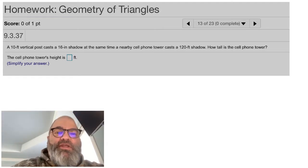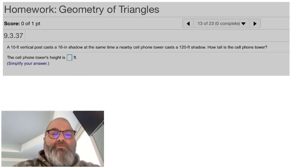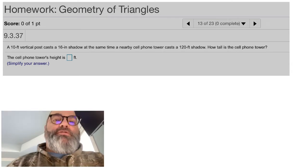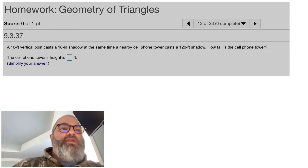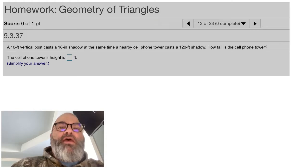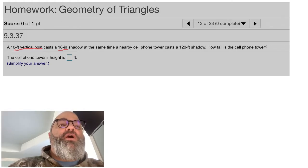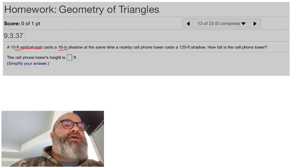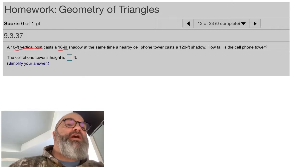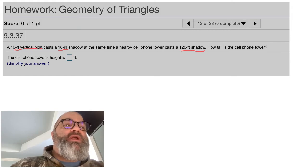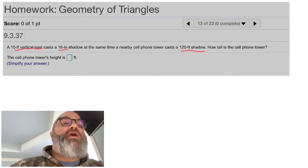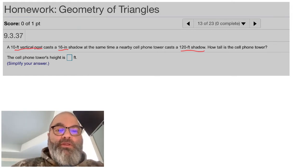Greetings everybody. Let's take a look at this example problem from the geometry of triangles. What we're given here is that we have a vertical post, and that vertical post is casting a 16-inch shadow, while at the same time, a cell phone tower that we want to know the height of casts a shadow that is 120 feet long. How do we go about working this problem?